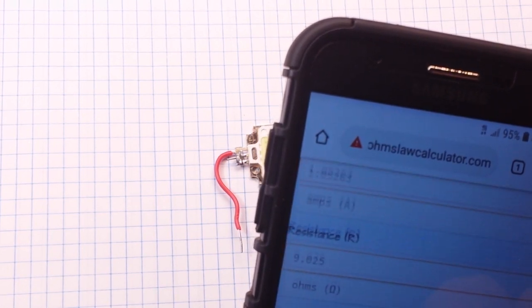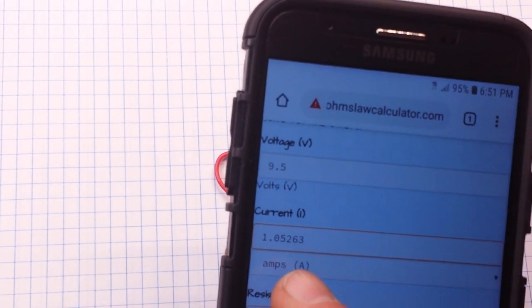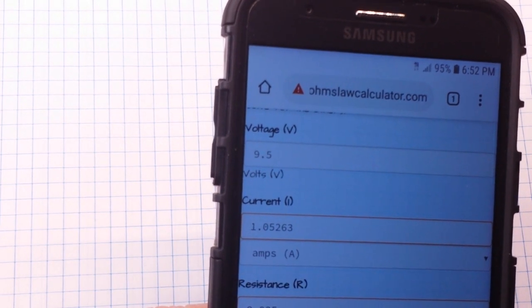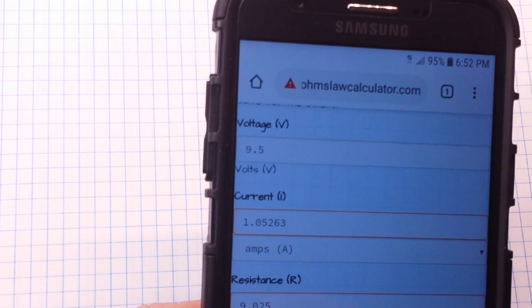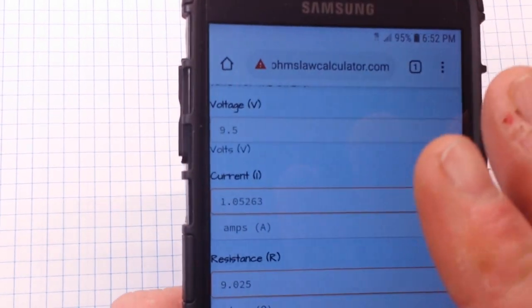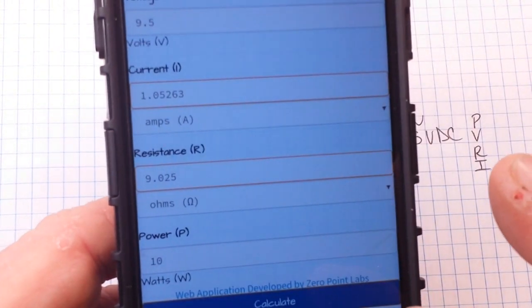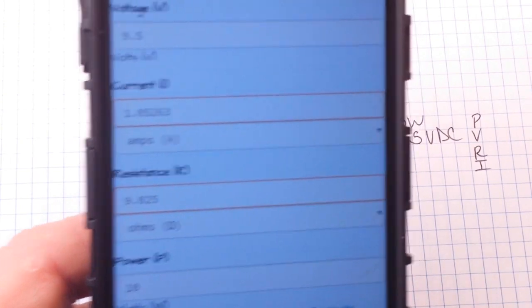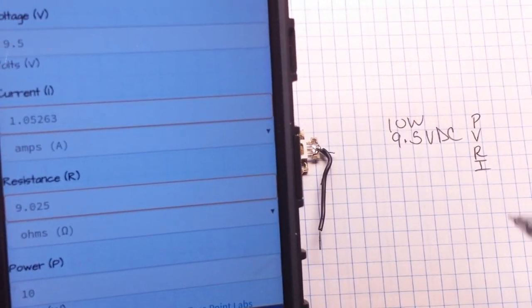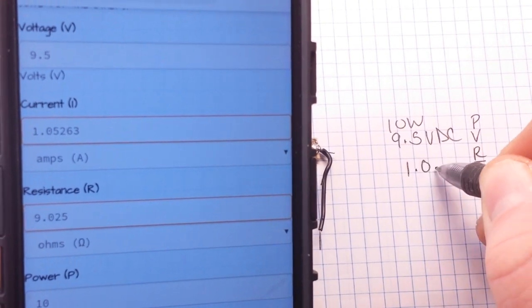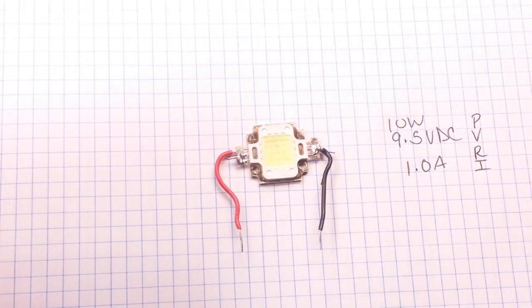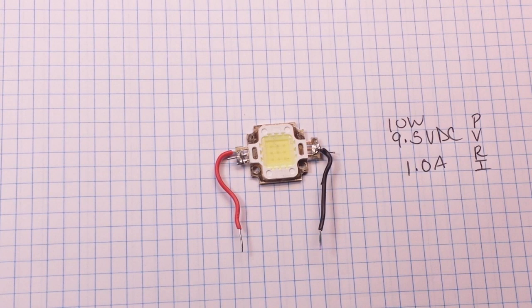and you see we want our current to be 1.05 amps. So you know, 1.0, 1 amp is good. You don't need to overdrive anything. It's saying we're going to get a resistance of 9.025, but what we're looking for here is our current. We're going to go with 1.0 amp.